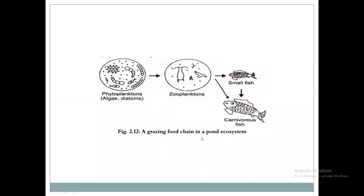This image shows the grazing food chain in a pond ecosystem. Phytoplanktons, which contain algae, diatoms, or any plants, are consumed by zooplanktons — small bacteria, small microorganisms, or insects. Then small fishes will consume the zooplanktons, and these small fish will be consumed by large fish. This is the grazing food chain in the pond ecosystem.